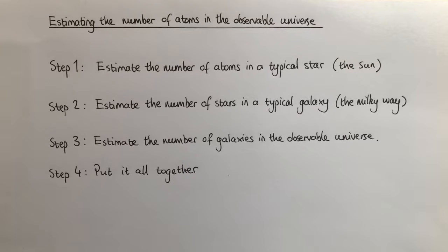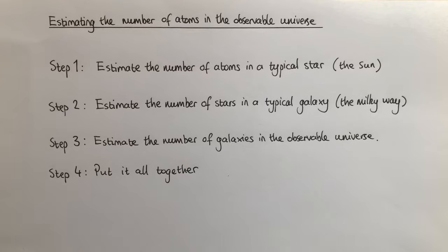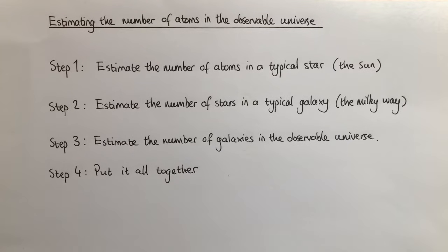The second step would be to estimate the number of stars in a typical galaxy, and we will use the Milky Way galaxy as an example. The third step is to estimate the number of galaxies in the observable universe, and we are going to use the Hubble Deep Field image in order to do this. Finally, with all of this information, we can put it all together and arrive at an estimate for the number of atoms in the observable universe.